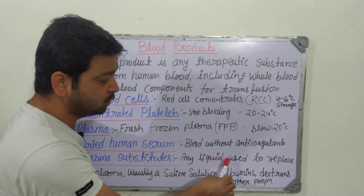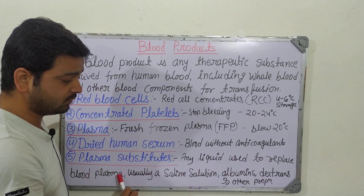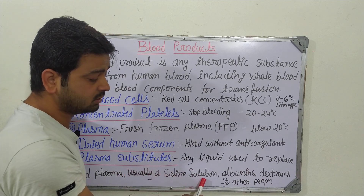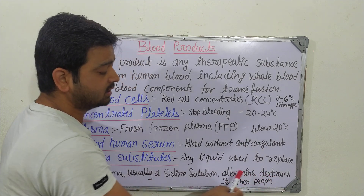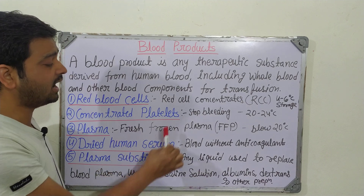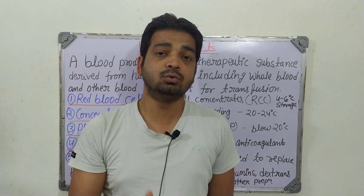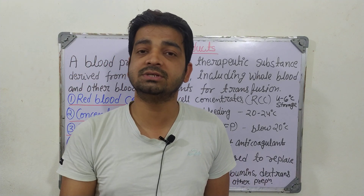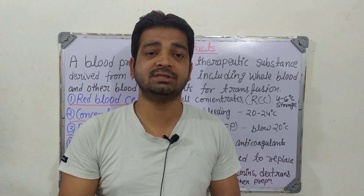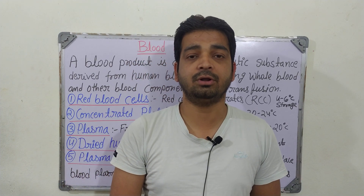The fifth one is plasma substitutes — any liquid used to replace blood plasma. For example, saline solution, albumins, dextrans, and other preparations can be used as plasma substitutes. These are the blood products prepared from human blood, given to patients suffering from deficiencies, in life-threatening problems, surgery cases, and emergency cases, for different therapeutic purposes.